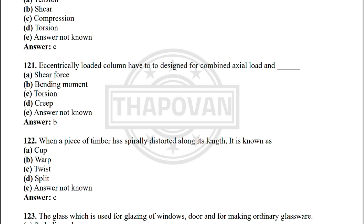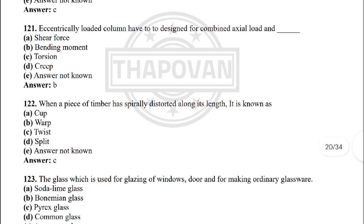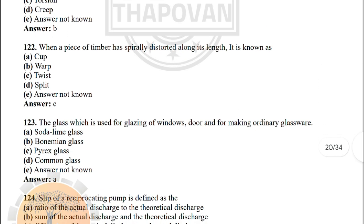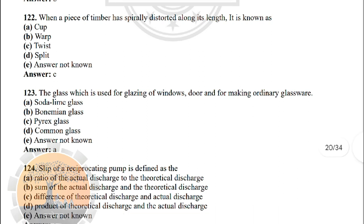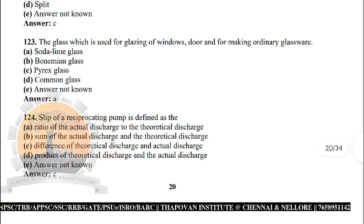Next: in a simply supported beam, fibres above the neutral axis are — the correct answer is option C: in compression. Next: eccentrically loaded columns have to be designed for combined axial load and — the correct answer is option B: bending moment.